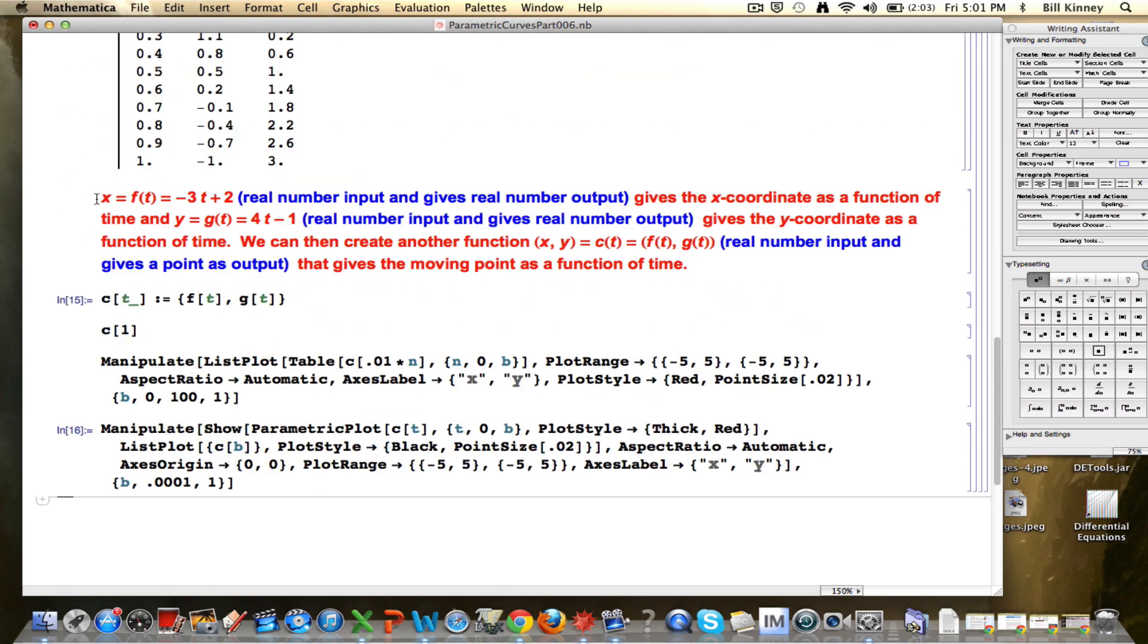Called that the set of parametric equations: x equals f(t) equals -3t + 2, and y equals g(t) equals 4t - 1. You think of that as a system of parametric equations that defines and represents and models that motion. We can also use another function that I called c(t). It's a different kind of function to represent the location of the person as a function of time.